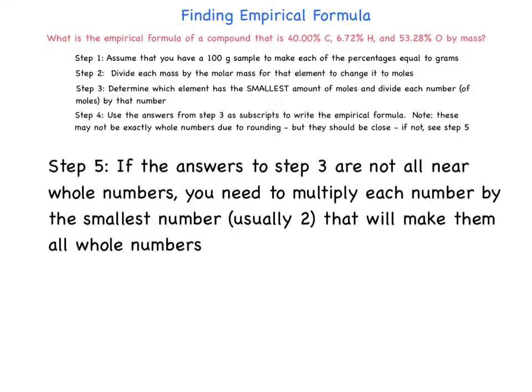Now sometimes they won't all be nice pretty numbers, like the 1 to 2 to 1. Sometimes they end up being like 1 to 2.5 to 2. And so we can't put a 2.5 as a subscript, so we've got to get them to all whole numbers. If we multiply that by 2, then that would get a whole number, but then we'd have to multiply all these other ones by 2. We'll show you what that means in just a second.